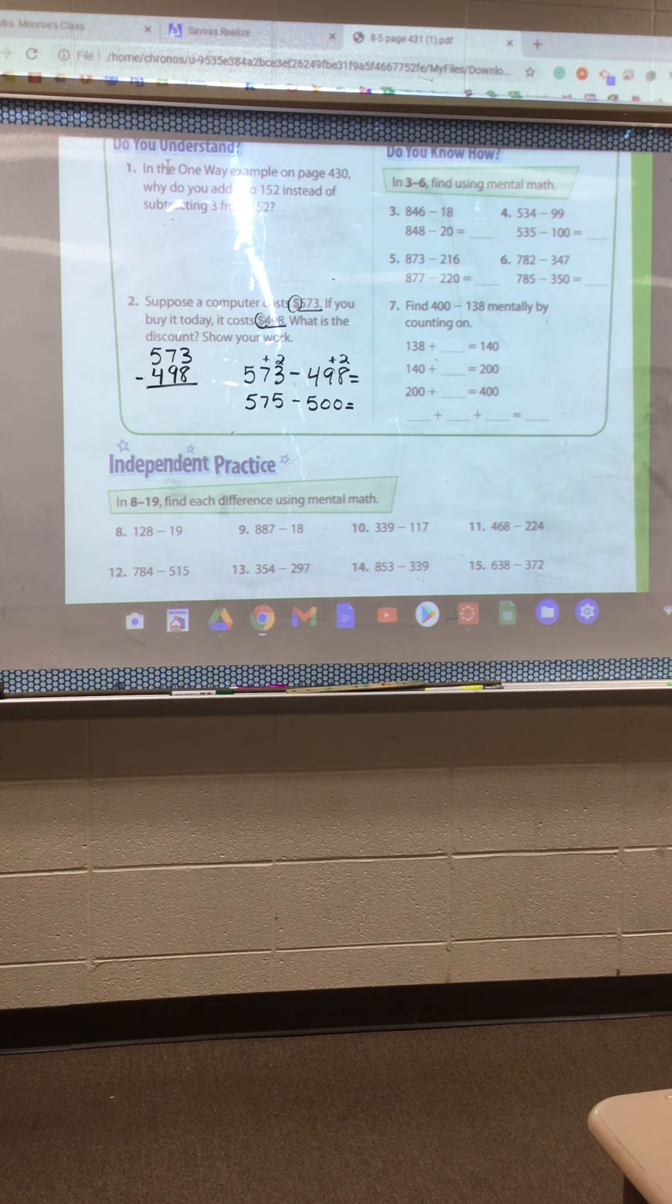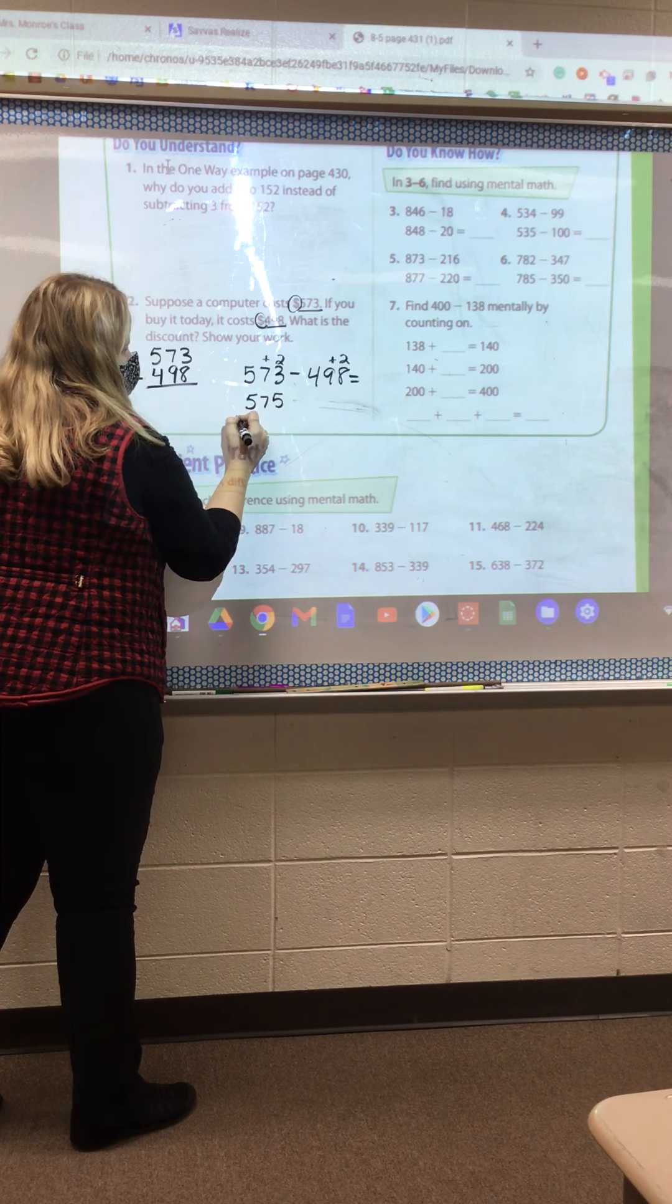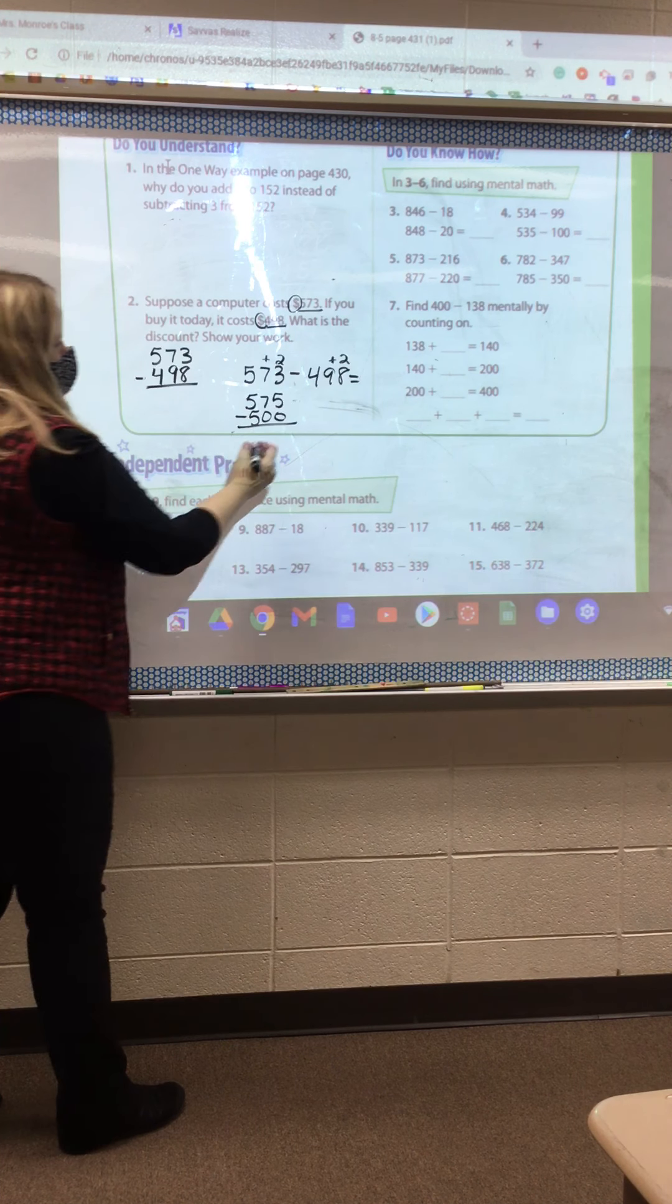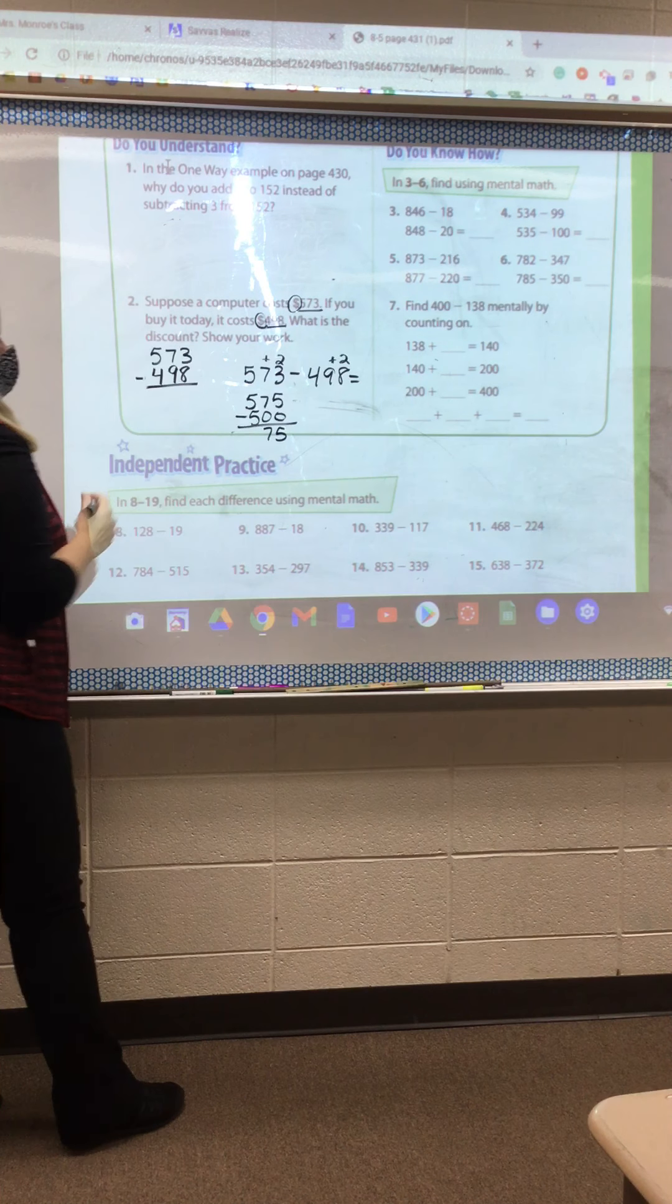Then let's do the other side. $498. We're going to count it by two. $499, $500. Can you subtract that in your head now? What if I do it like this? $575 minus $500. What's my answer? $75. Let's see if it's the same over here.